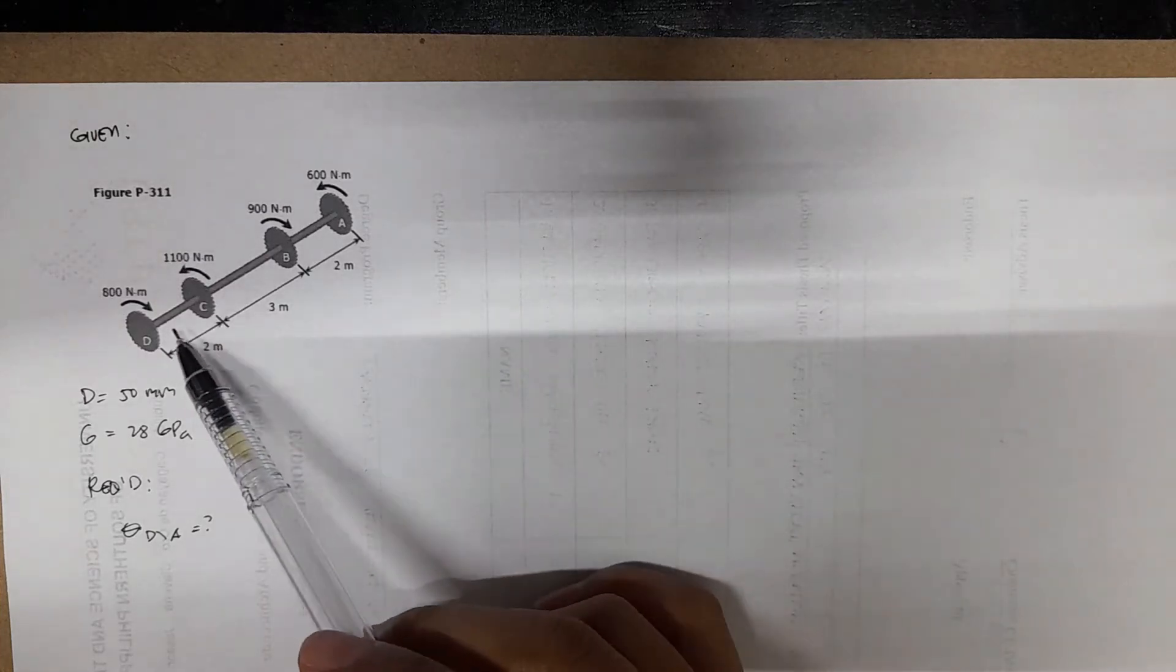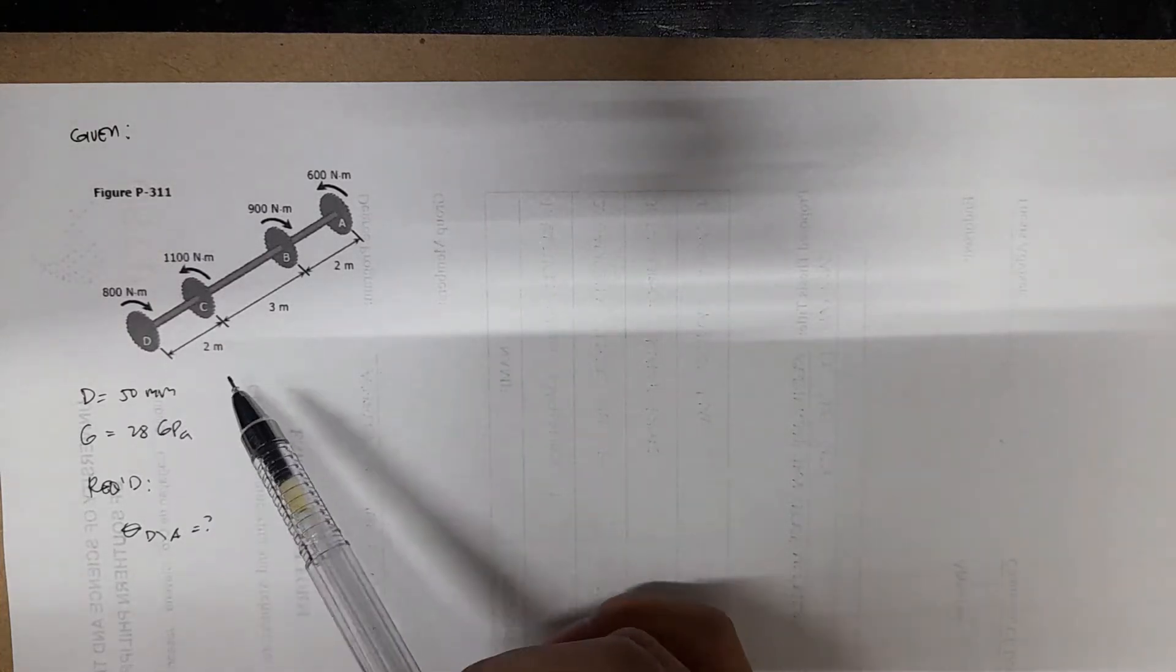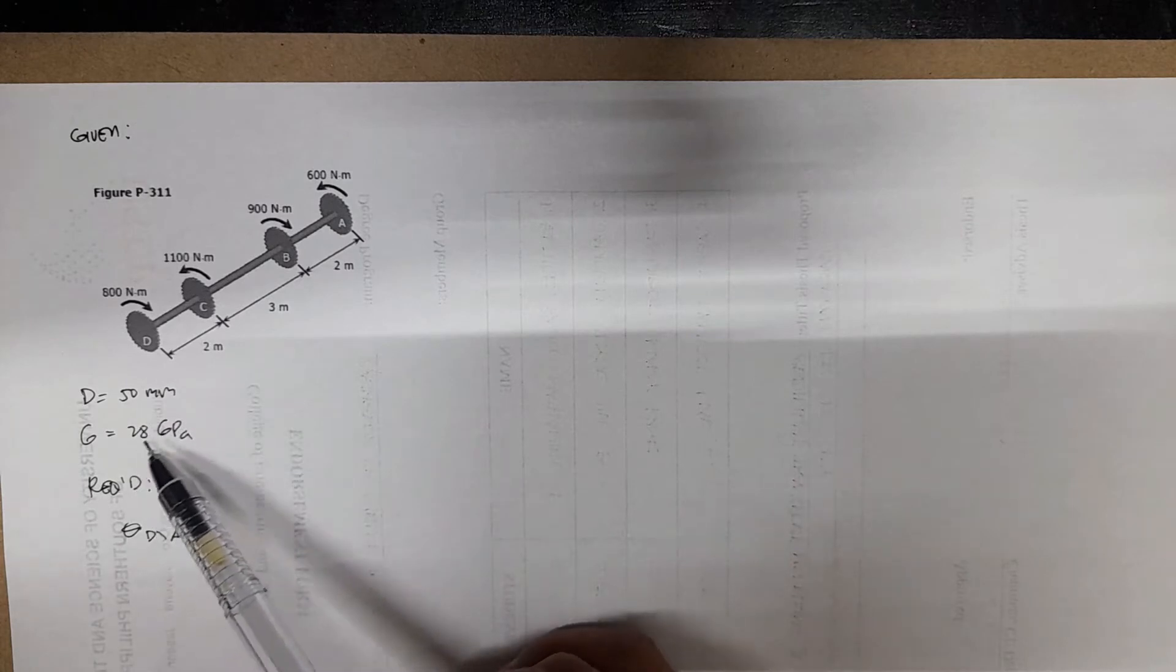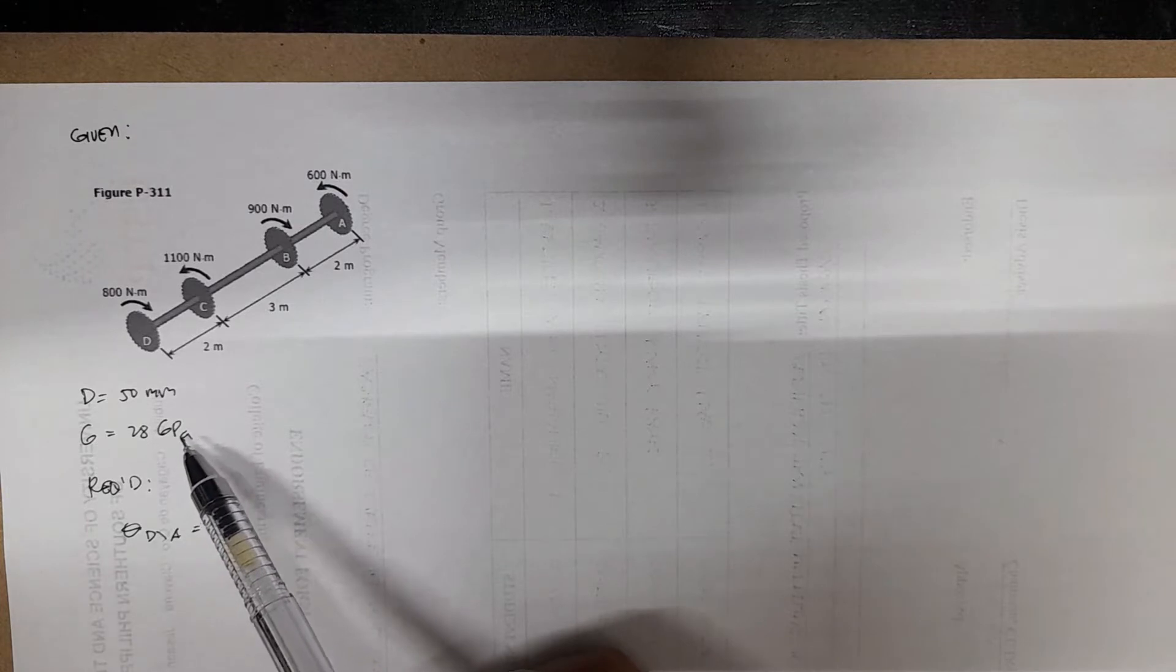So for this example, we have a shaft with constant diameter equal to 50 millimeters. Also given is the modulus of rigidity G of the shaft which is equal to 28 gigapascals.